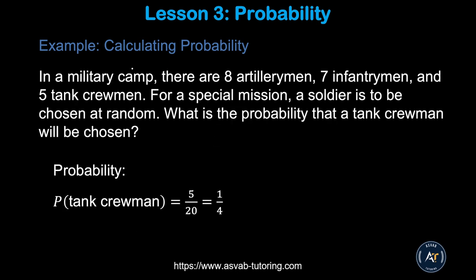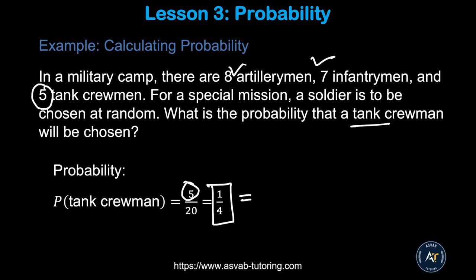Here is another practice problem. In a military camp there are 8 artillery men, 7 infantry, and 5 tank crew. For a special mission, what is the probability of a tank crewman being chosen? The desired outcome is 5 tank crew. The total is 8 plus 7 plus 5, which equals 20. So 5 out of 20, simplified, gives you 1 over 4. If you convert that fraction to a percent, that gives you 25%. So there is a 25% chance that a tank crewman will be chosen from this group.